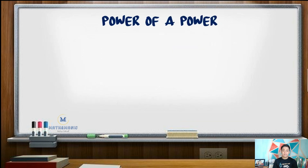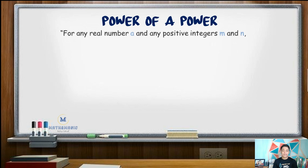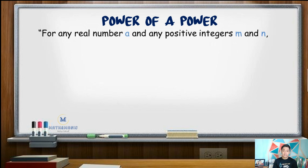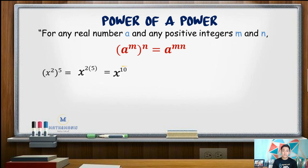Next, we have power of a power. It states that for any real number a and any positive integers m and n, the quantity a raised to m, raised to n, is the same as a raised to mn. For example, x squared raised to the 5th is the same as x raised to 2 times 5, or x to the power of 10. Another example: the cube of 10 squared is 10 raised to 2 times 3, or 10 raised to 6, which is simply 1 million.